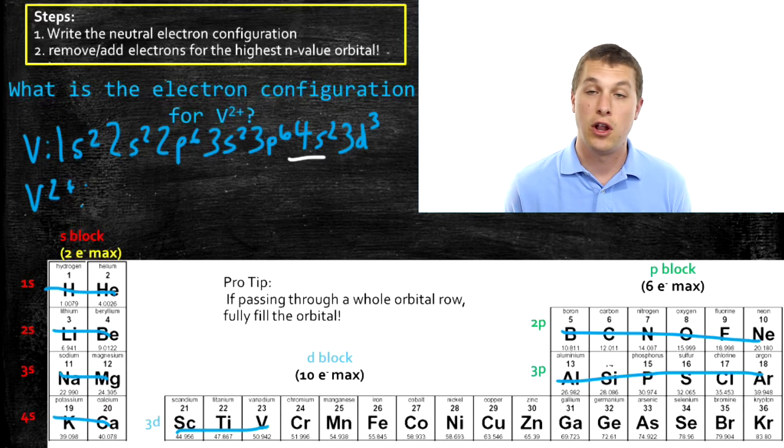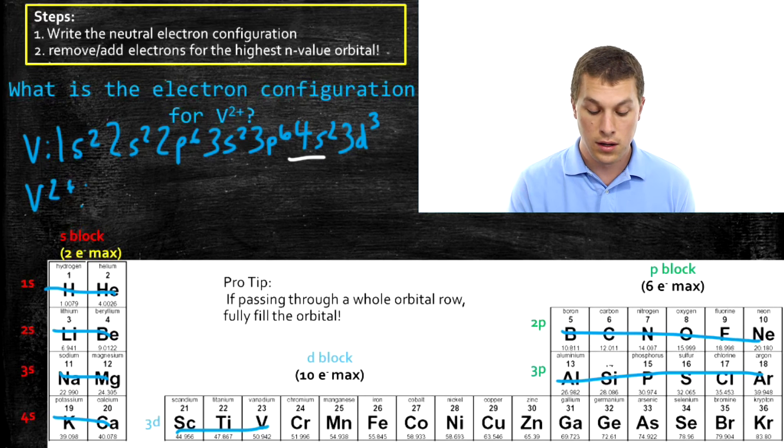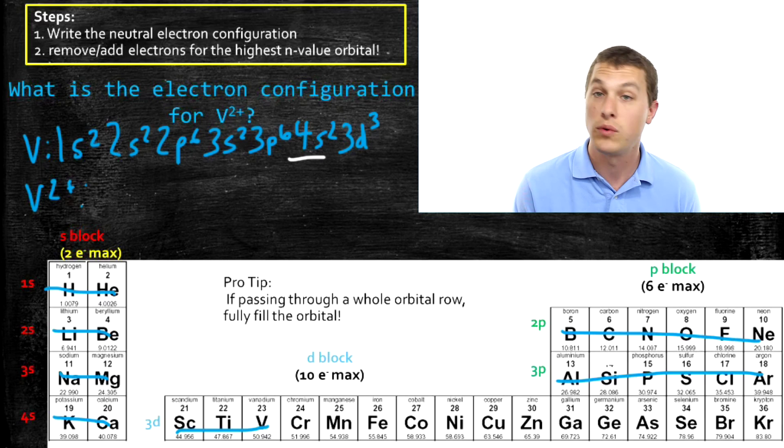And that looks a little funny, because it doesn't follow our standard filling order. But that's okay, we just always remove them from the highest N value orbital, which in this case is the 4S orbital. And we have to remove two electrons,